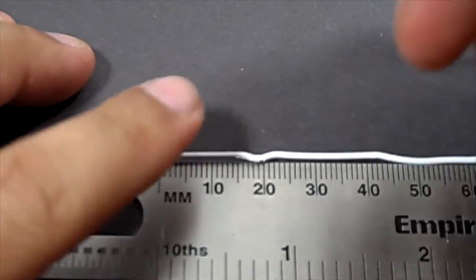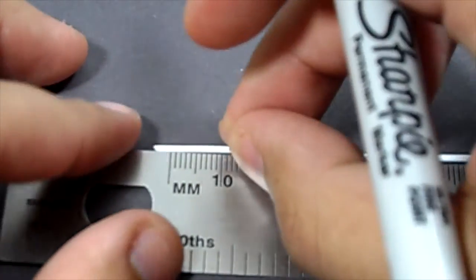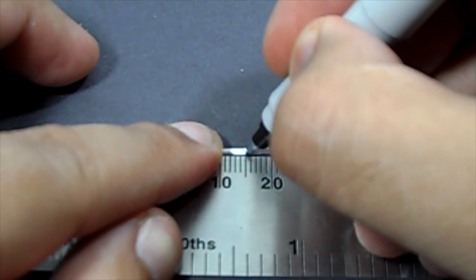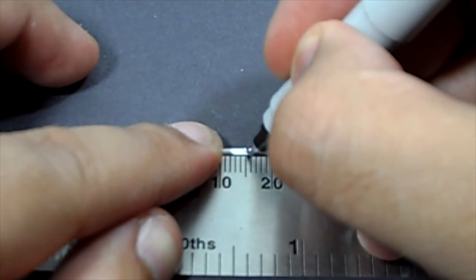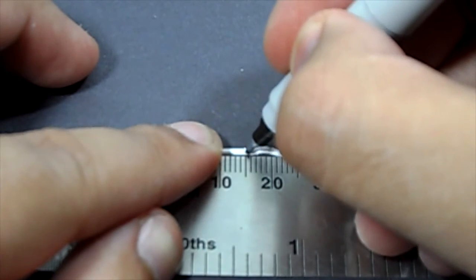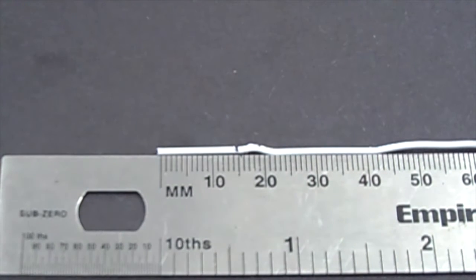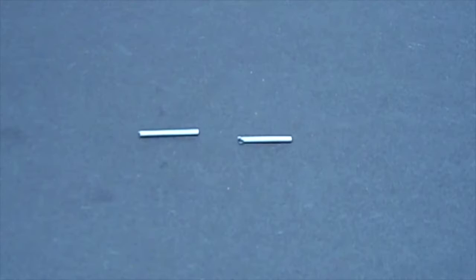What we're going to do is measure with our fine tip Sharpie 15 millimeters - that's going to be the size of our cigarette. I'm going to cut two of these and then come back. I'm just going to use my pliers to cut them.